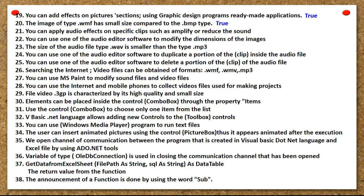The image of type dot WMF has small size compared to the dot BMP type. You can apply audio effects on specific clips such as amplify or reduce the sound. You can use one of the audio editor software to modify the dimensions of the images. The size of the audio file type WAV is smaller than the type MP3. You can use one of the audio editor software to duplicate or delete a portion of the clip inside the audio file.